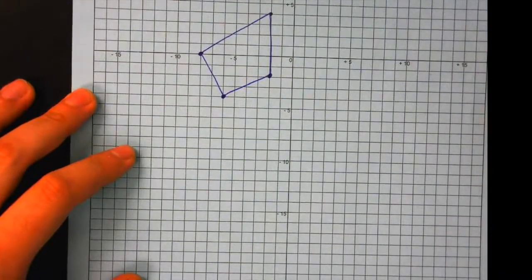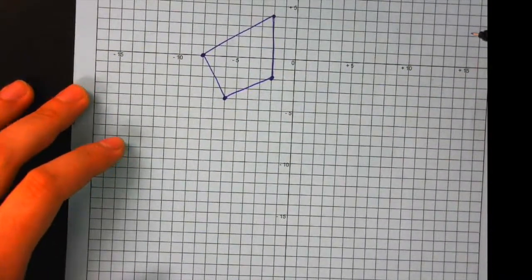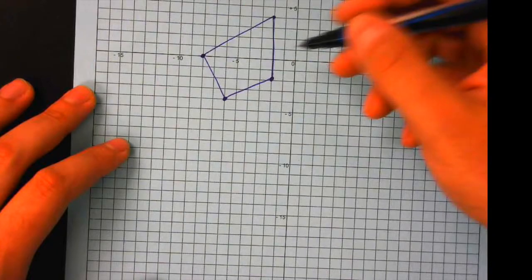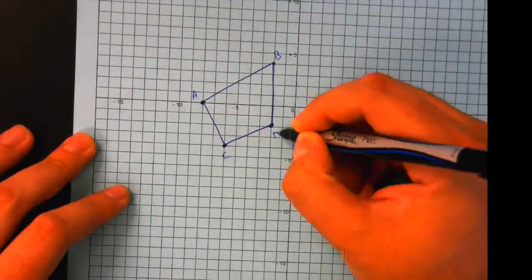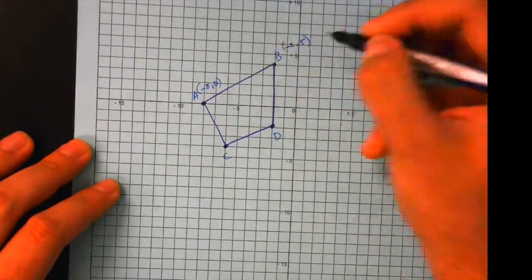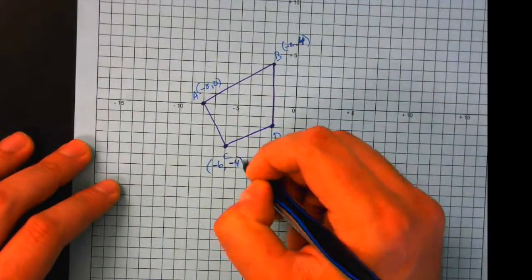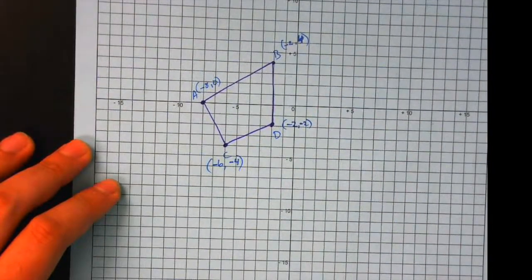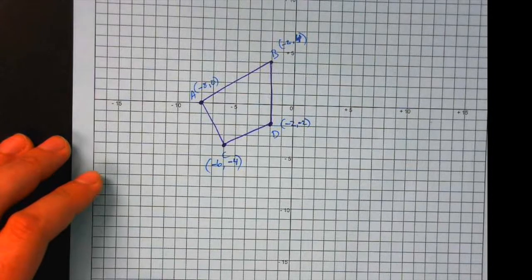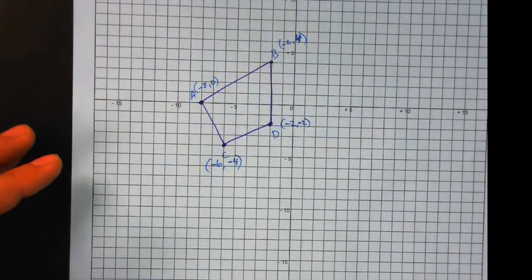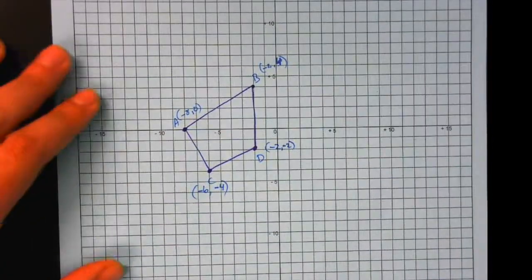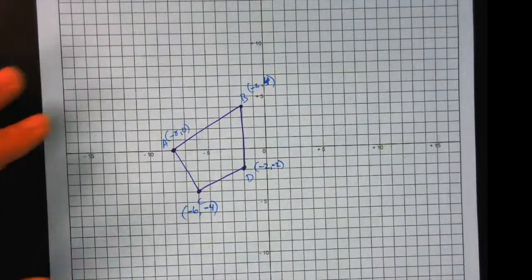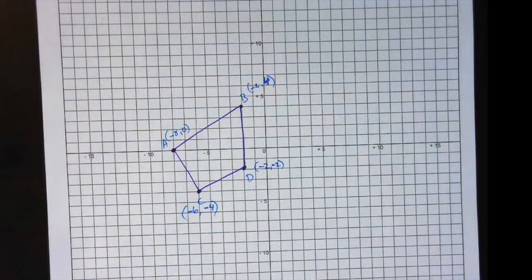Label the coordinates and say A, B, C, D. Okay. So now that we've labeled our points, what are we going to do now? We've got the points labeled.